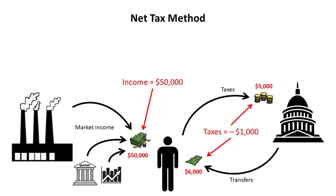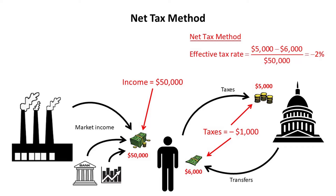If we break those two things apart and call the person's income simply what the person earns from market activities, and we call that $6,000 in transfers a negative tax — because in essence that's what it is, the government stepping in and giving money to the person rather than taking it — notice what happens. The person earns $50,000, the government taxes them $5,000, and then returns $6,000, resulting in a net tax of negative $1,000.